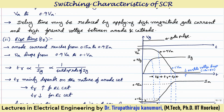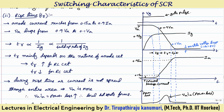The delay time can be reduced by applying a high magnitude gate current and a high forward voltage between anode and cathode, because the rate of recombination depends on the magnitude of gate current. Also, more voltage means more leakage current and a higher rate of recombination.